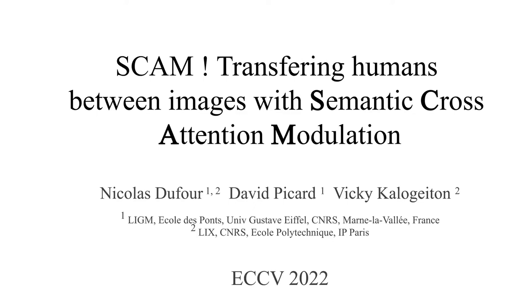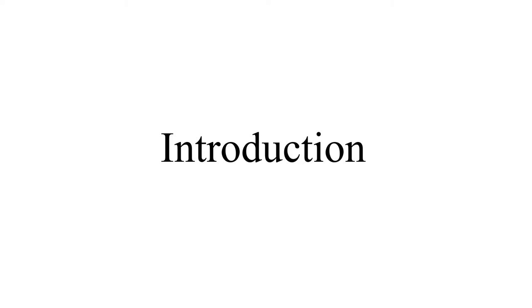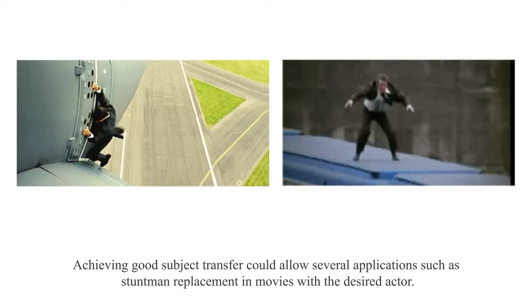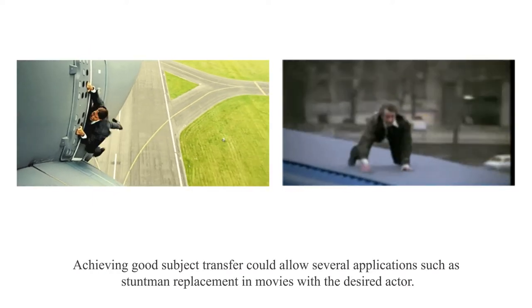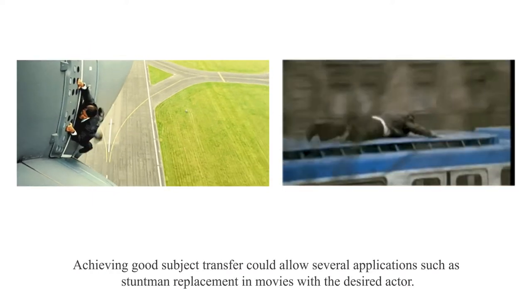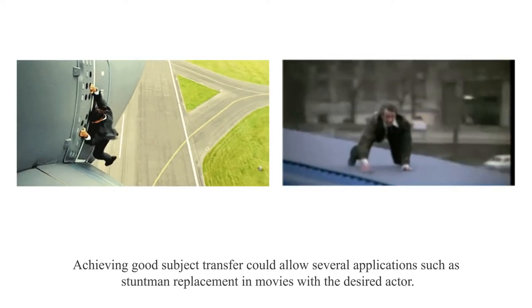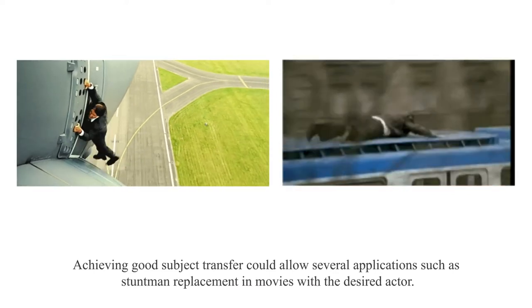We are going to present SCAM, transferring humans between images with semantic cross-attention modulation. We aim at replacing a subject from one image with the subject from another image. Achieving good subject transfer could allow several applications such as stuntman replacement and movies with the desired actor.